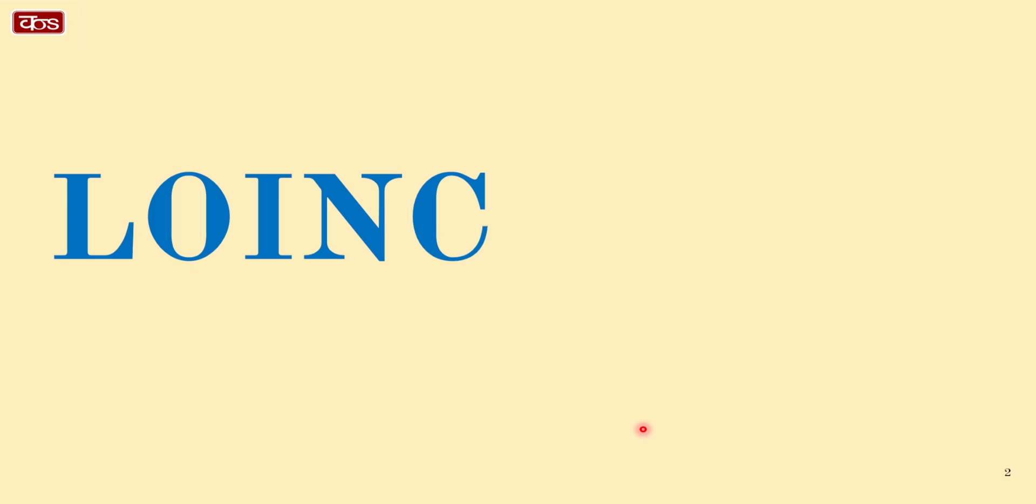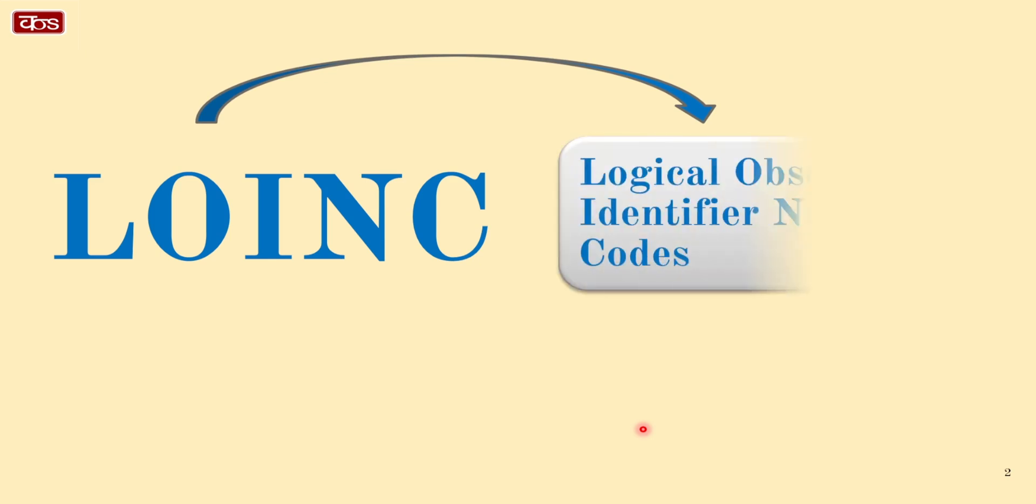So what exactly is LOINC? LOINC stands for Logical Observation Identifiers Names and Codes. It's a standardized system for identifying health measurements, observations, and documents. This makes data exchange more seamless and accurate. Imagine it as a universal language for lab tests and clinical observations.